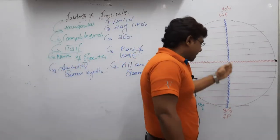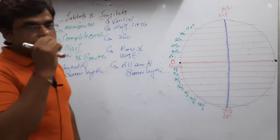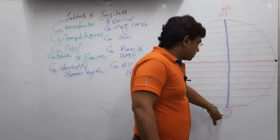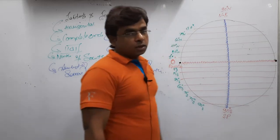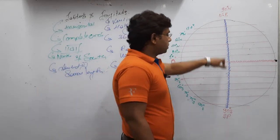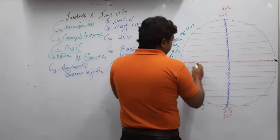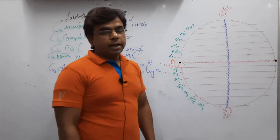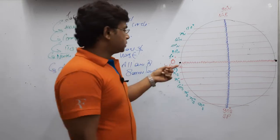The axis is the imaginary line passing through the centre of the earth, connecting the north pole and the south pole. Based on the north and south poles, we draw a horizontal line exactly in the middle, which is known as the equator — the line which divides the earth into two equal halves.